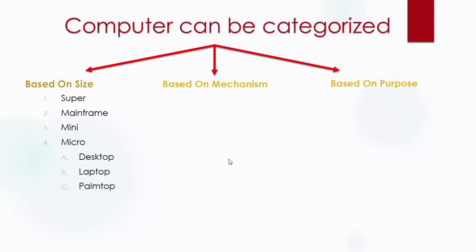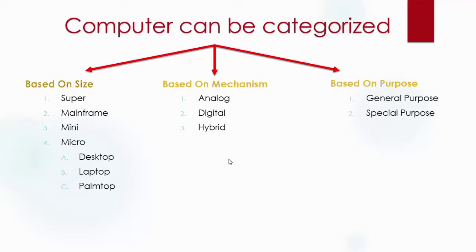Based on mechanism or technology used, computers are classified as analog, digital, and hybrid. Based on purpose, computers are classified as general purpose and special purpose.